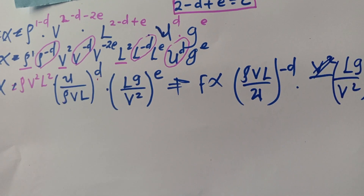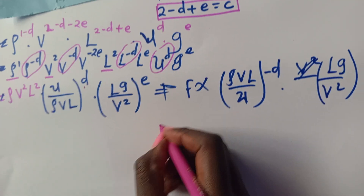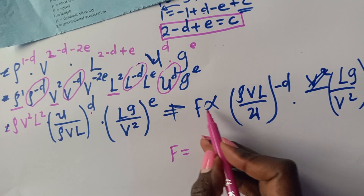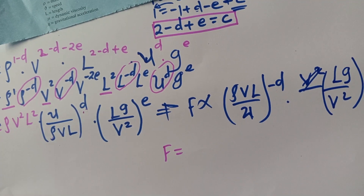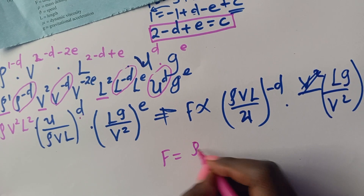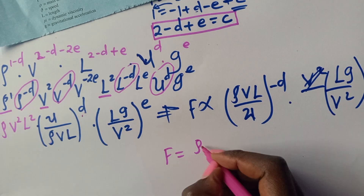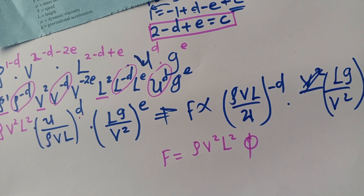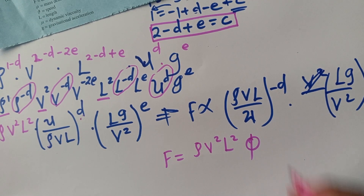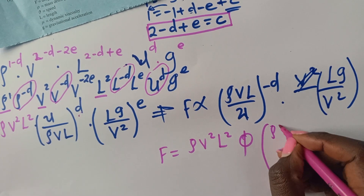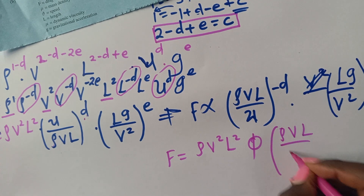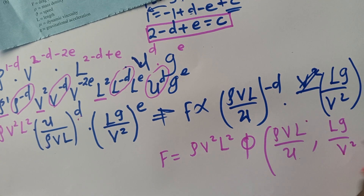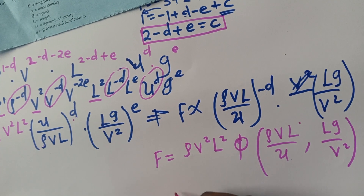So F is directly proportional to rho V squared L squared, times a function of (rho V L over mu) and (LG over V squared). Introducing the proportionality constant gives an equal sign.